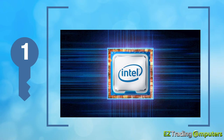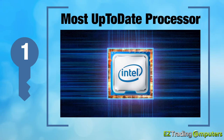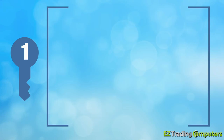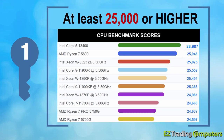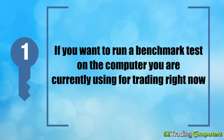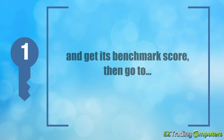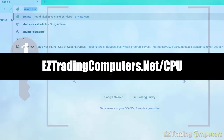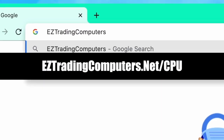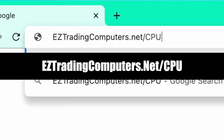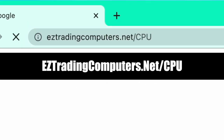The first key is having a lightning fast and the most up-to-date processor. A processor that has a benchmark score of at least 25,000 or higher is an absolute must. If you want to run a benchmark test on the computer you are currently using for trading and get its benchmark score, go to easytradingcomputers.net/CPU after you finish watching this video, and I'll walk you through it.